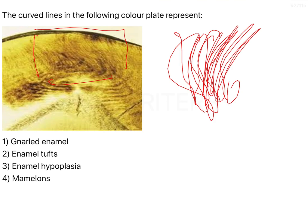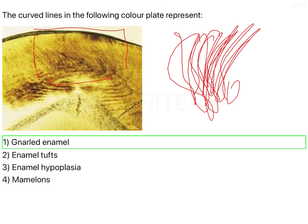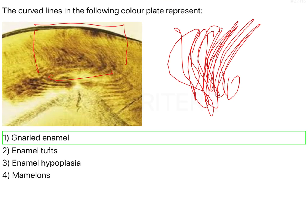Since we are talking about enamel here and I have used the term gnarled, the answer is going to be gnarled enamel. Why does this phenomenon actually appear? Because your enamel rods in your tooth are not always straight.